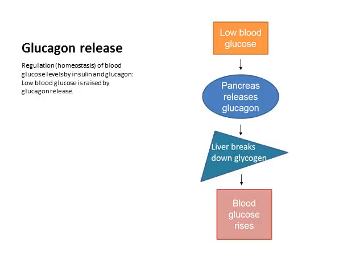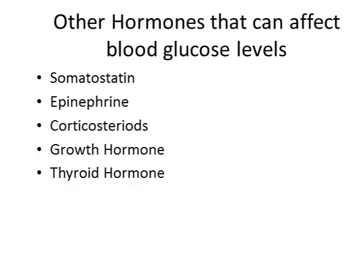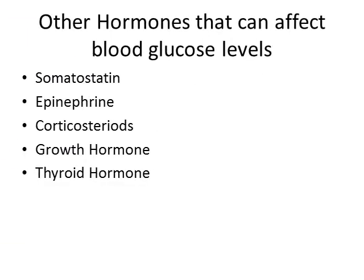Some other hormones can also affect blood glucose. Epinephrine, produced during periods of stress, causes blood sugar to rise. Corticosteroids — produced normally or given artificially in hospital settings to help with inflammation — can cause elevated blood sugar even in non-diabetic patients. For example, a patient admitted with pneumonia given a corticosteroid may suddenly develop high blood sugar that needs to be managed. Growth hormone and thyroid hormone can also cause a rise in blood glucose levels.